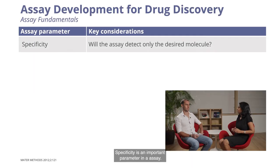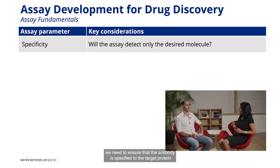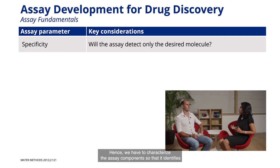I often hear people mentioning sensitivity versus specificity of an assay. Can you explain the difference? Specificity is an important parameter in an assay. When referring to antibody-based assays, we need to ensure that the antibody is specific to the target protein and does not cross-react with other proteins. Hence we have to characterize the assay components so that it identifies the product molecule and not the substrates or the precursors.